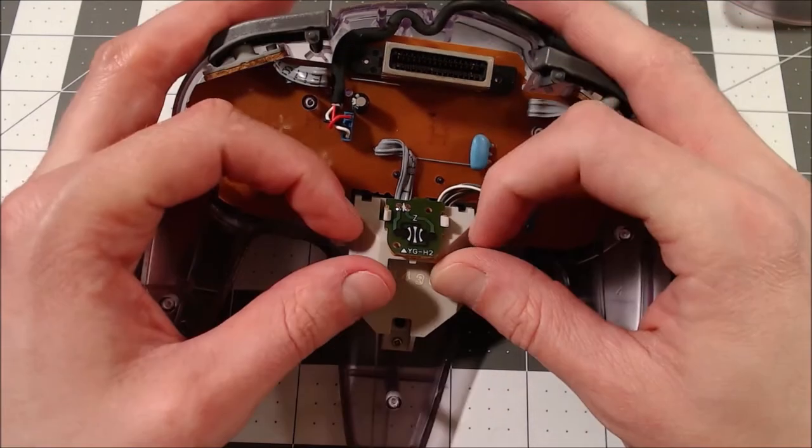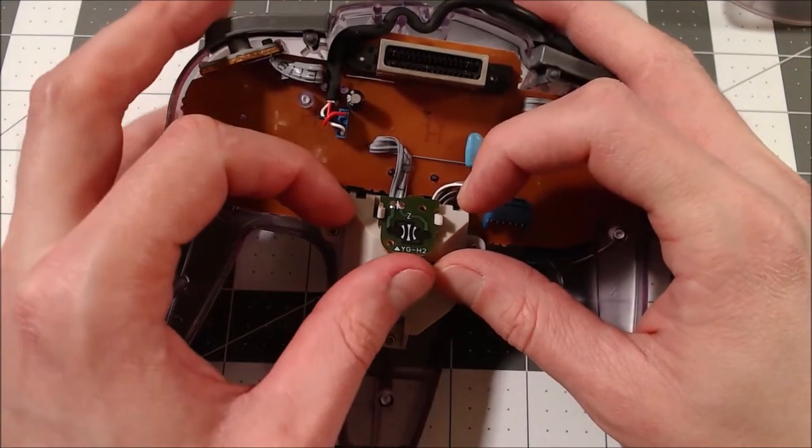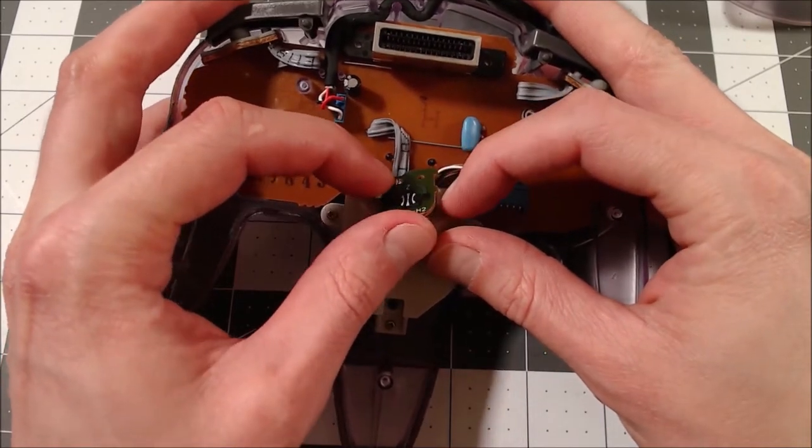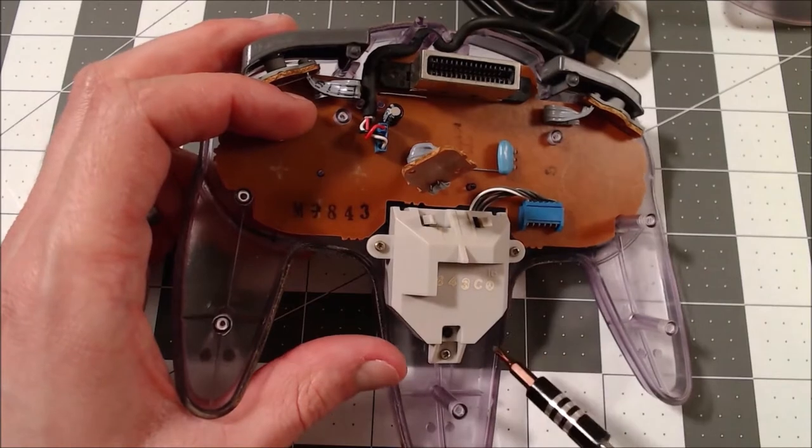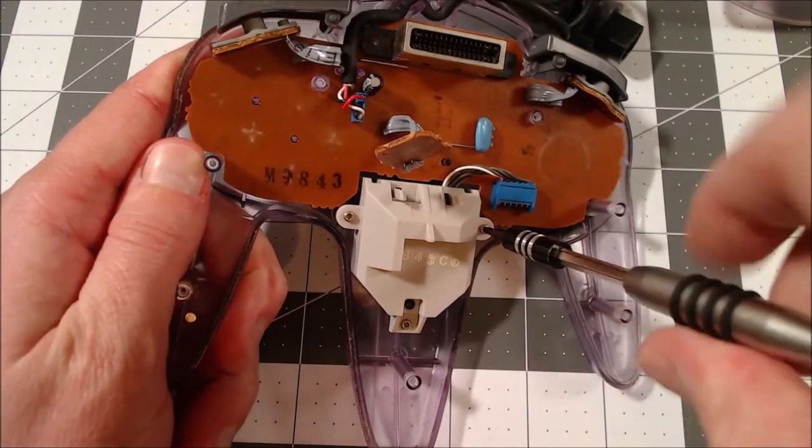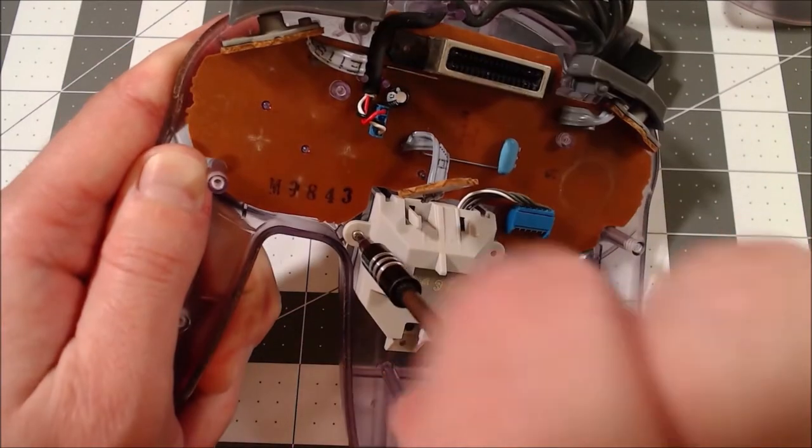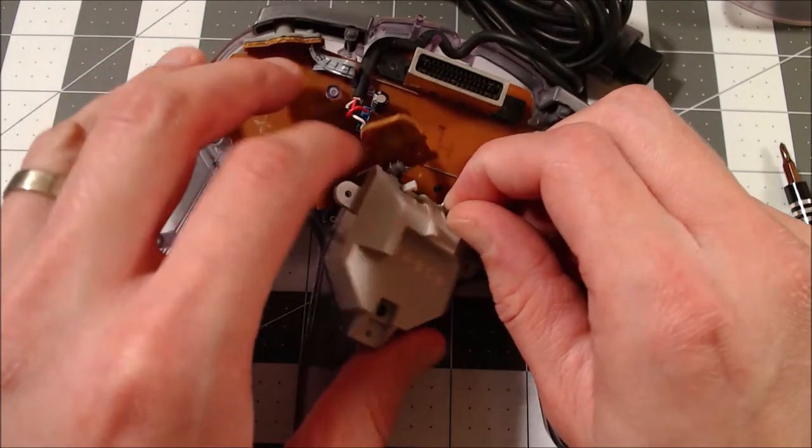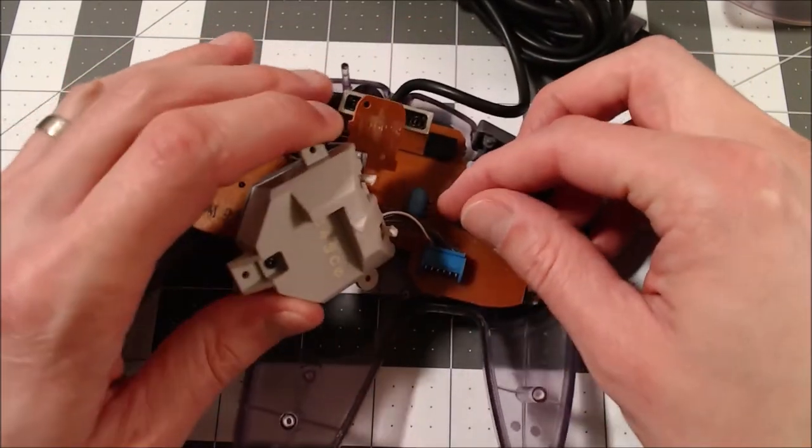Just kind of pulls off. And then pull these two white clips to the side to detach this little board. Now we can take out the joystick assembly. We can pull this out and detach the connector.